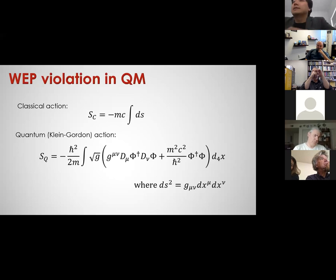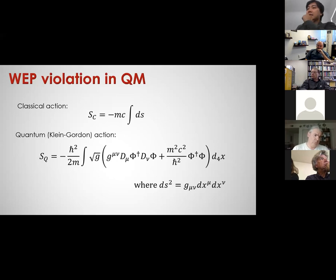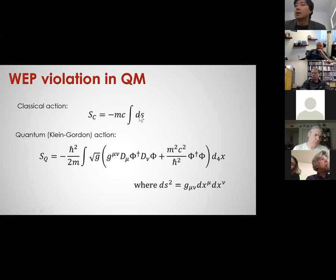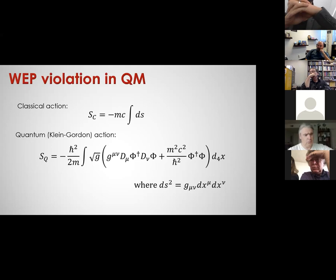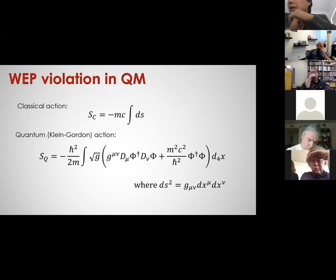But why should we think WEP could be violated in quantum systems? Let's compare the action for a spinless classical particle and a quantum particle in curved spacetime. In the classical action, mass appears simply as a multiplicative factor, so when you write out the classical equations of motion, mass cancels out and doesn't appear. In contrast, in the quantum action, mass is not simply a multiplicative factor. When you write out the equations of motion — the Klein-Gordon equation in curved spacetime — mass plays a role. In other words, how quantum particles behave in a gravitational field appears to depend on their mass.